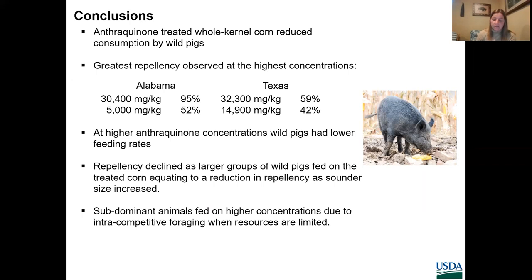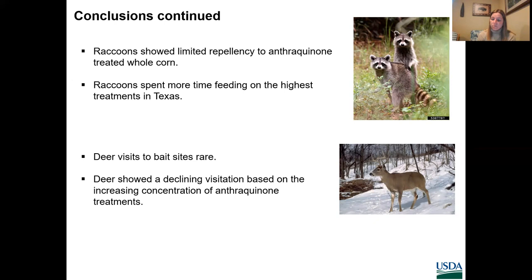Additionally, wild pigs are known to be intracompetitive while foraging, especially when resources are limited, which likely resulted in subdominant animals feeding more on the higher concentrations of anthraquinone-treated corn than untreated corn as more pigs were present. Raccoons did not appear to be repelled by any of the anthraquinone treatments. Wild pigs visited bait sites most during dusk, whereas raccoons would visit most during night and avoided bait sites when wild pigs were present, so it's likely raccoons were visiting after wild pigs had consumed the untreated corn, leaving only anthraquinone-treated corn. Deer visits to the bait sites were rare but followed the expected trend of declining visitation based on increasing anthraquinone concentration.